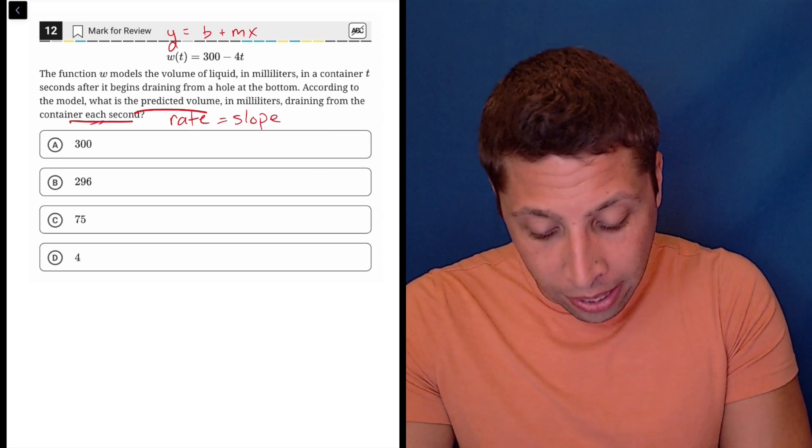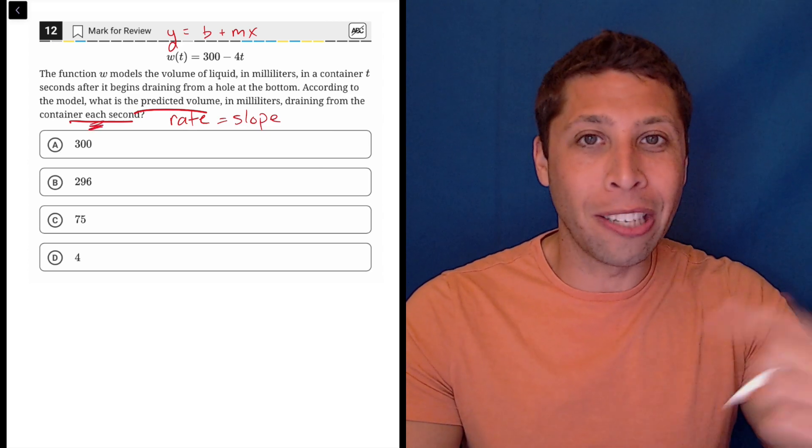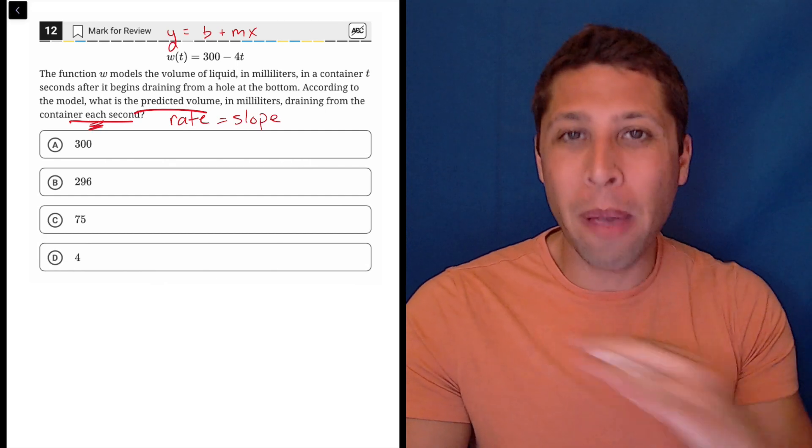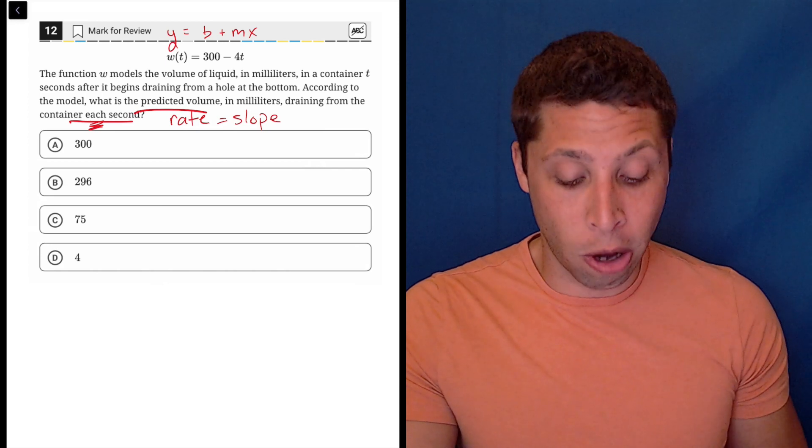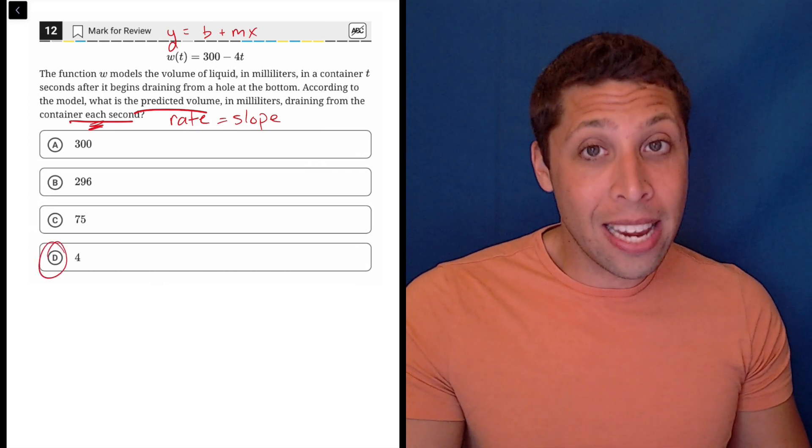So when they talk about rates, things happening each second, each minute, each mile, whatever it may be, that's going to sound like a slope. So really, they're just saying, look at this equation and tell us the slope, and it's d, it's 4.